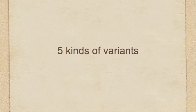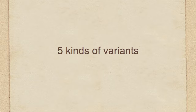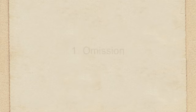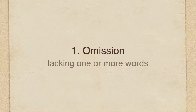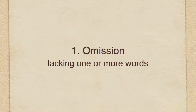There are essentially five types of textual variants that scholars would recognize when it comes to the New Testament. The first is what's called an omission — if you look at a particular text and compare it to a manuscript and that manuscript lacks a word or more than one word, that would be called an omission.